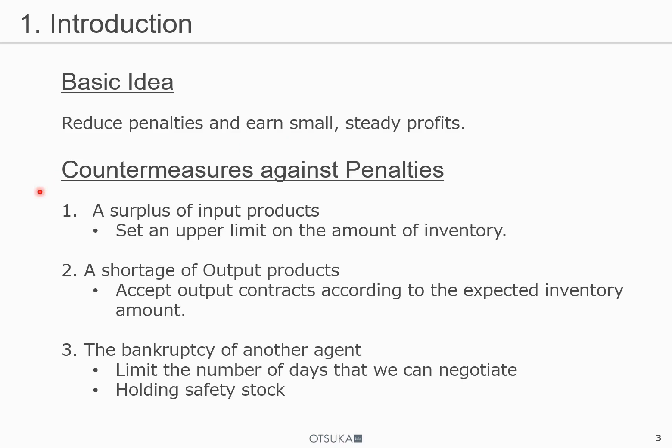There are three major risks to the standard track. The first is surplus of input products. All excess inventory is sold to the spot market at a discount. By setting an upper limit on the amount of inventory so that it doesn't arrive too many input products. The second is the shortage of output products. If we run out of stock by the shipping day, we must buy products from the spot market at a higher price. By accepting output contracts according to expected inventory amounts, it is possible to prevent a shortage of output products.